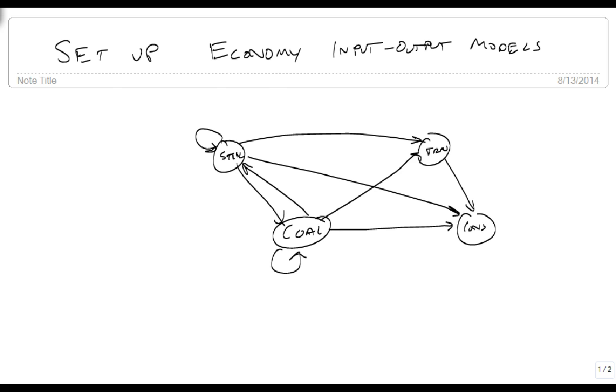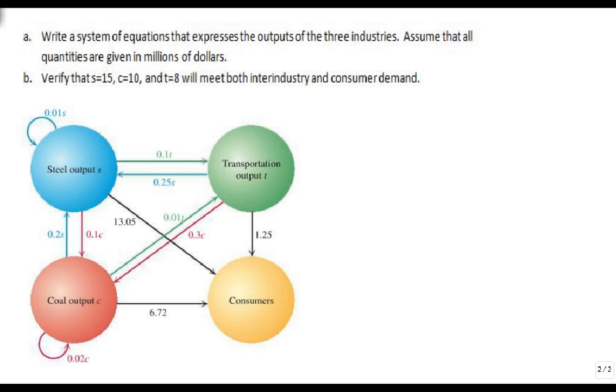All we're going to talk about today is how we set them up, and then we'll verify a solution. So here's our system. It's a very simple system using steel, transportation, and coal, and consumers. And we can see these output arrows, and so we see all the arrows coming in and out.